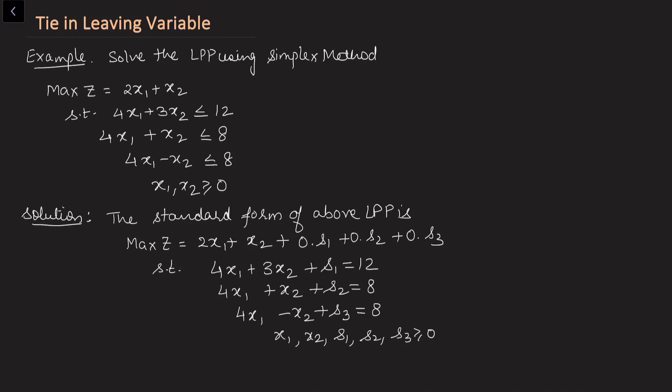In this video we'll be learning how to break the tie in the leaving variable and what are the consequences of having a tie in a leaving variable. If we have a tie in the leaving variable it leads to degeneracy in the simplex table. To explain this, let us consider an example: solve the linear programming problem using the simplex method. This is a maximization problem with three constraints. In standard form we add slack variables s1, s2, s3 with cost 0, and all decision variables x1, x2 are non-negative.